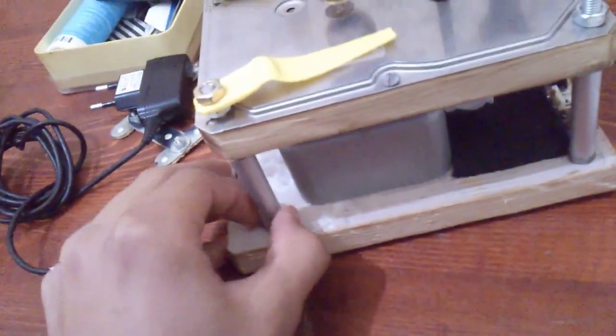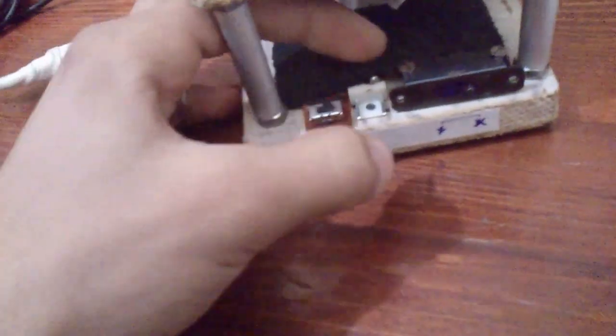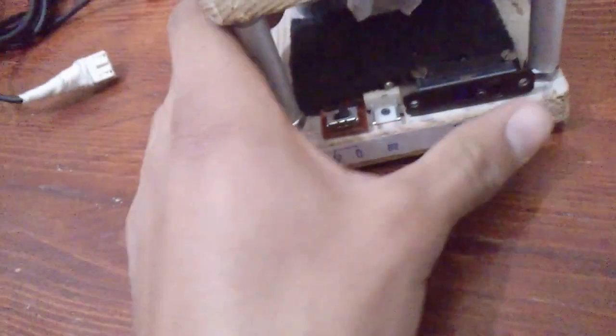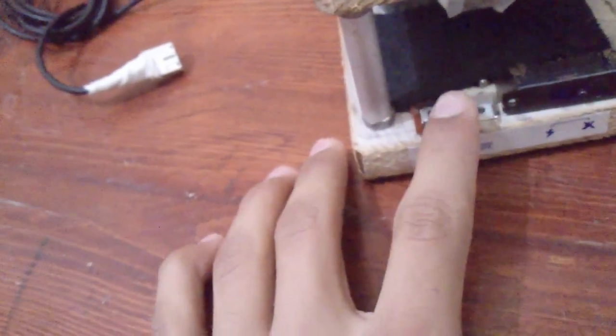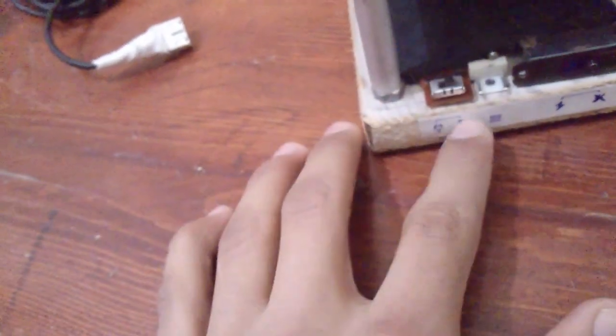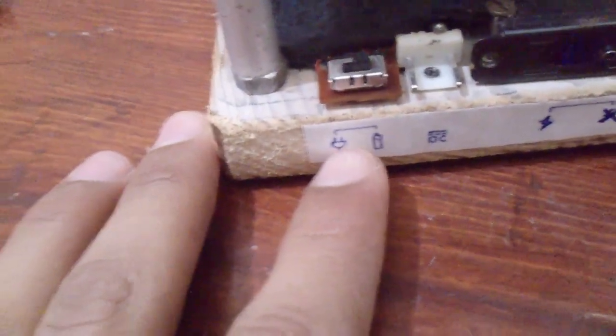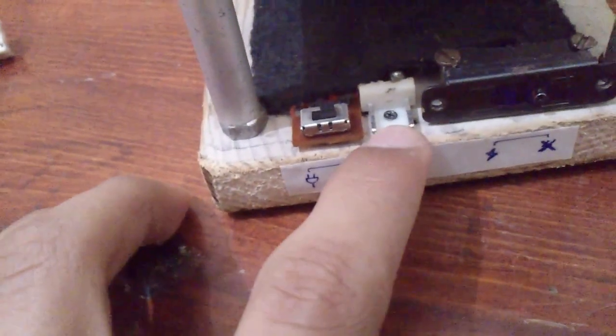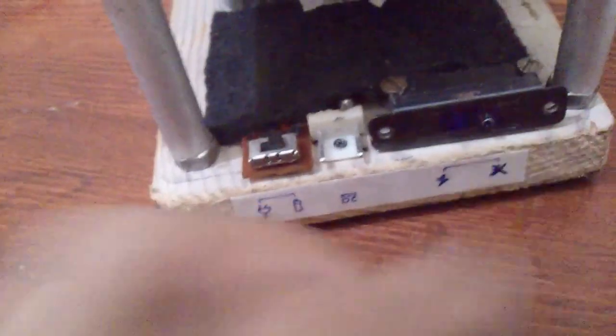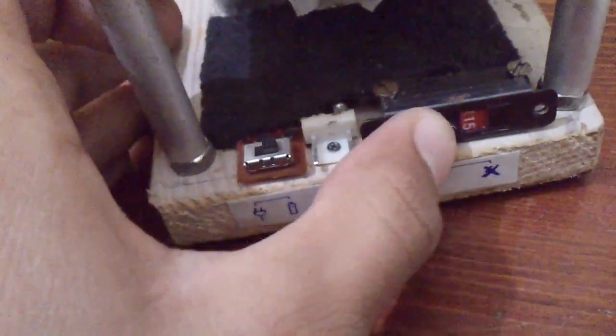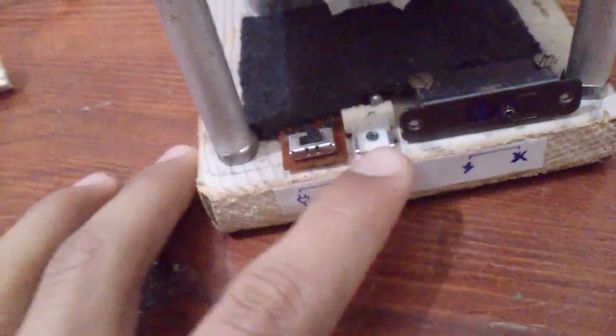The improvements I made to the electric part is adding a rechargeable phone battery inside it. This button right here is to choose between using the battery or using the power adapter electricity. This is the port for the power adapter, and this one right here is to choose between charging or not charging the battery when the power adapter is plugged in.